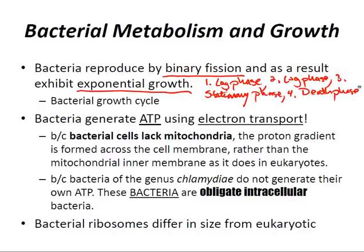Bacteria generate ATP using the electron transport chain. Because bacterial cells lack mitochondria, the proton gradient is formed across the cell membrane rather than the inner mitochondrial membrane. Bacteria of the genus Chlamydia do not generate their own ATP — these bacteria are obligate intracellular bacteria.